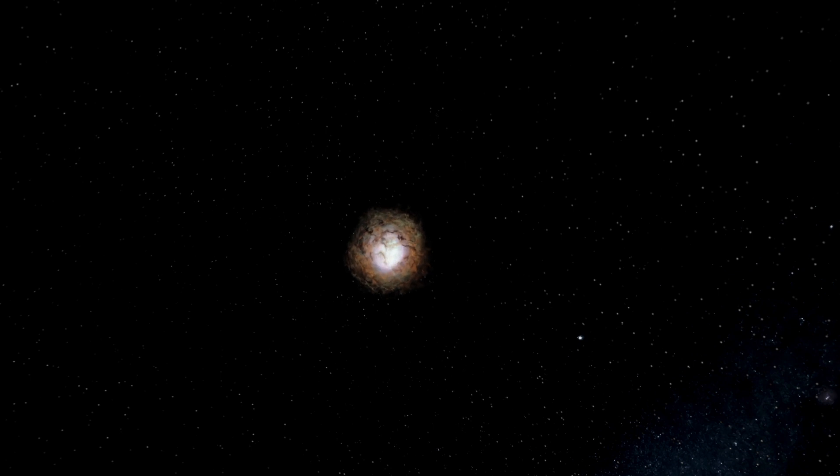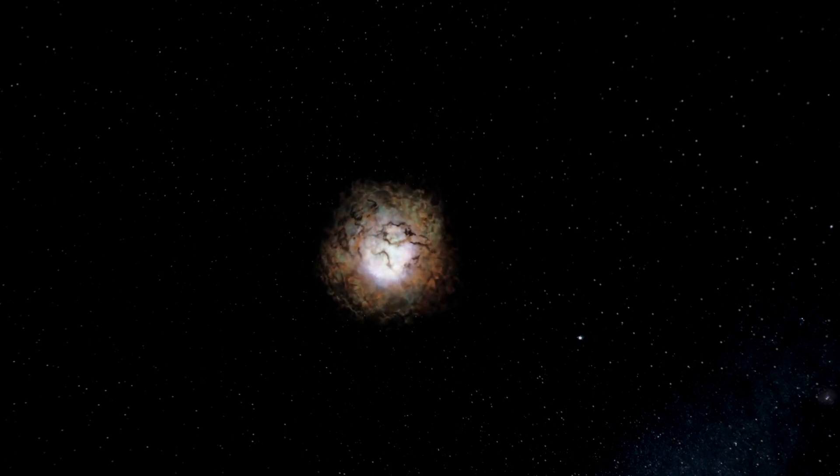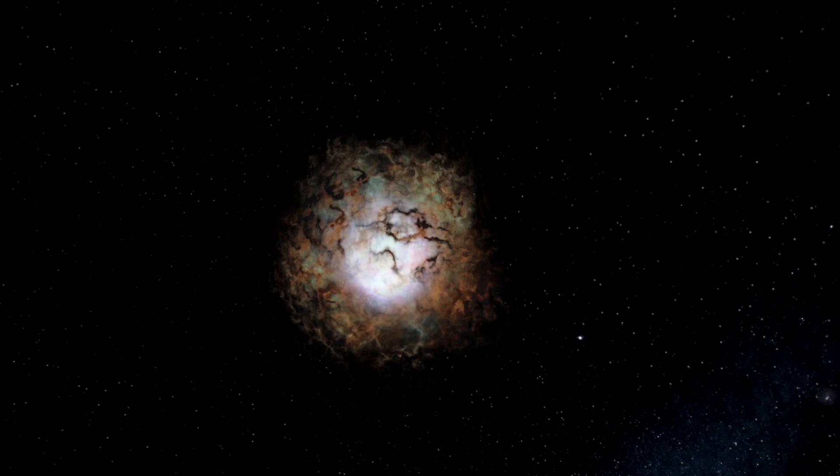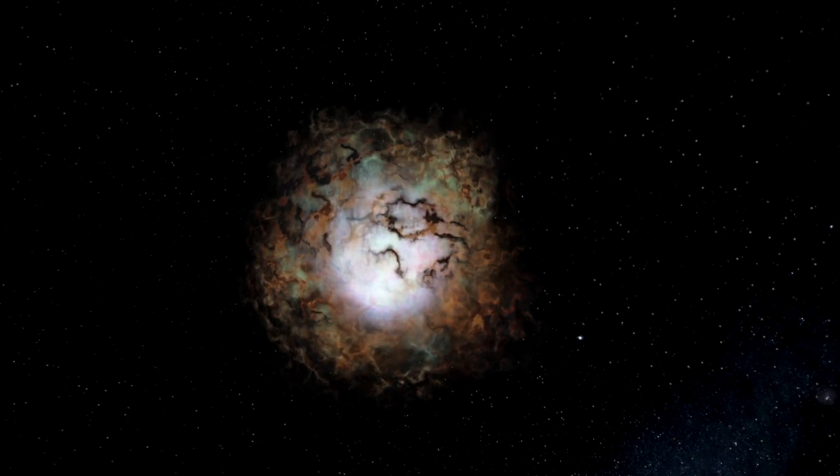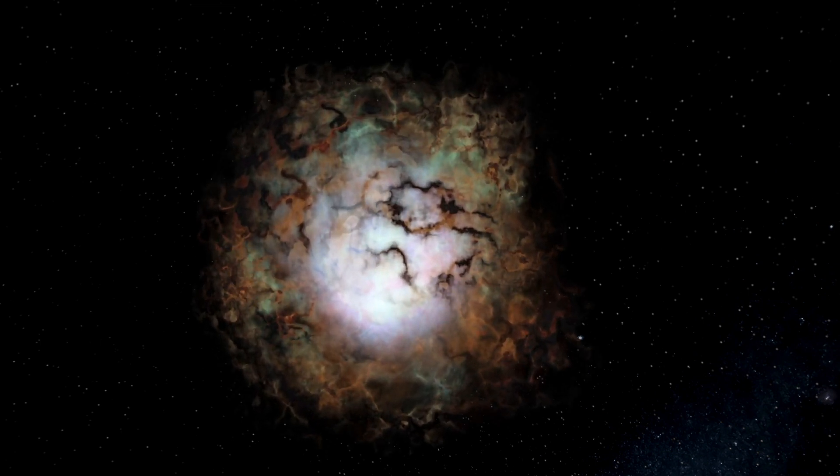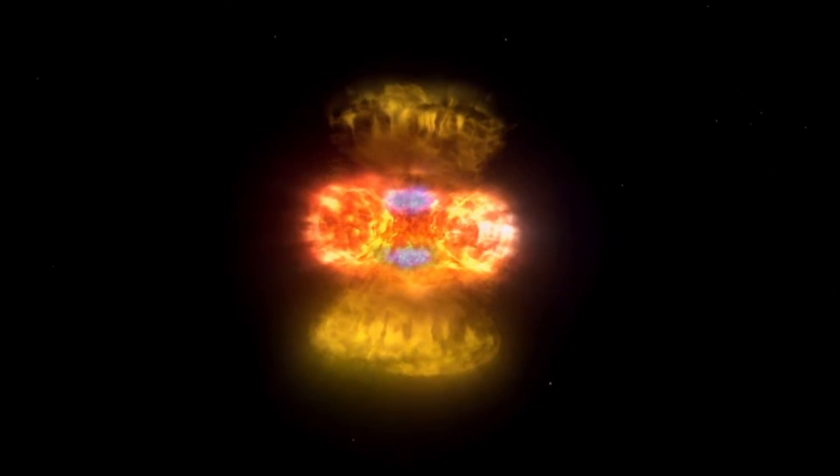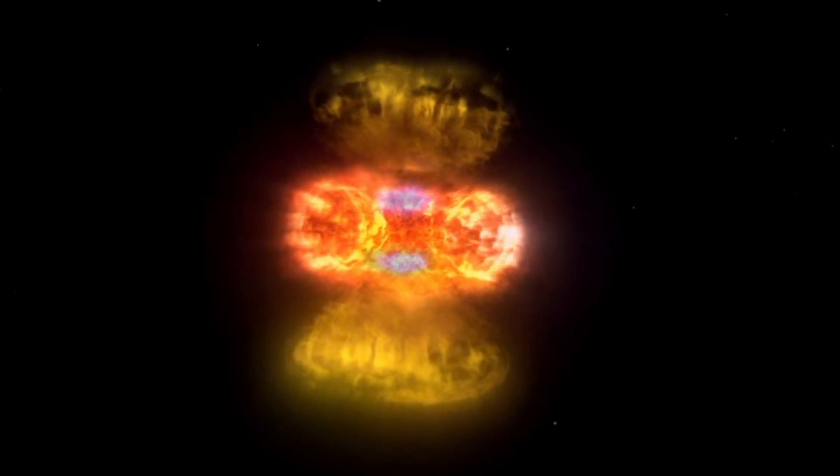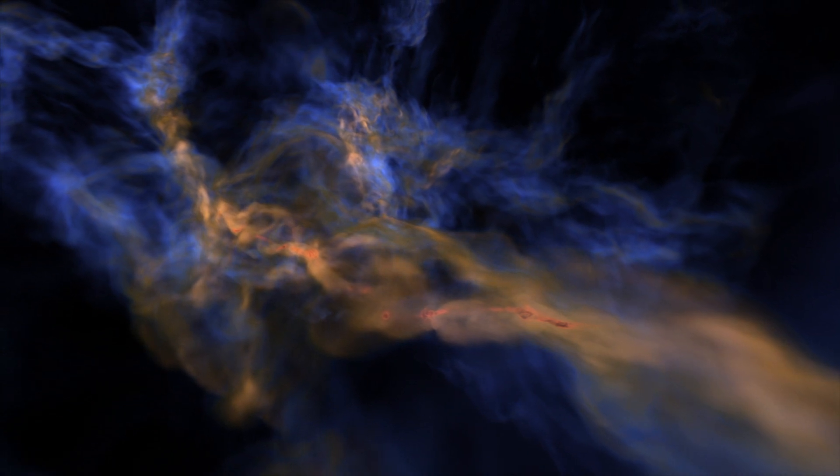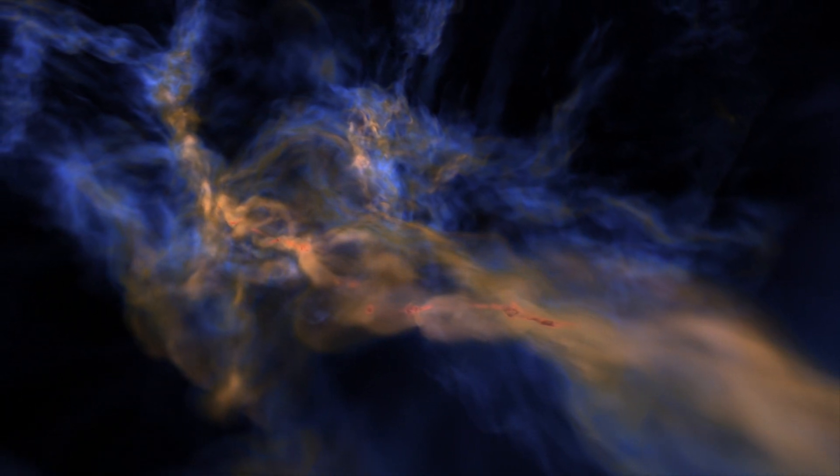This is because pulsars are born from supernovas of the progenitor star which would have released a colossal amount of energy in the form of radiation and high energy particles. The energy and resulting shock waves from such an explosion would have been so powerful that it would have completely obliterated any object that was within the immediate vicinity of the exploding star, including planets.